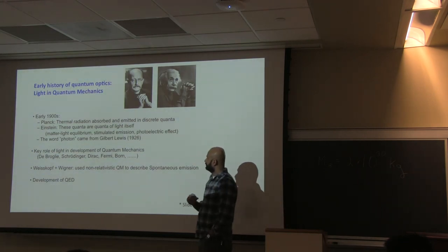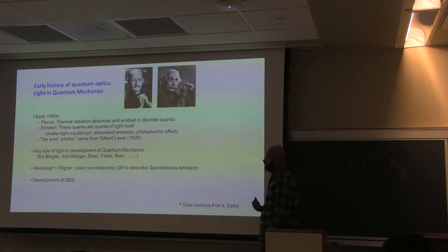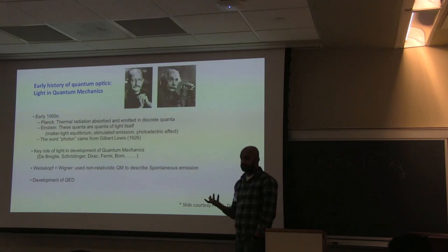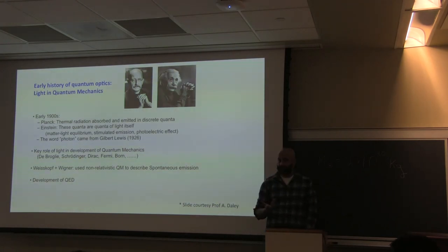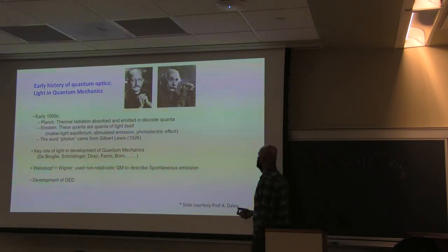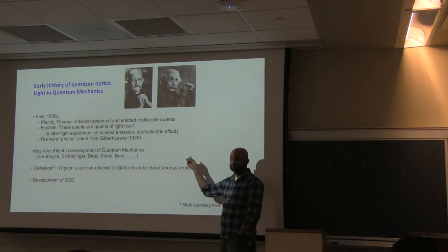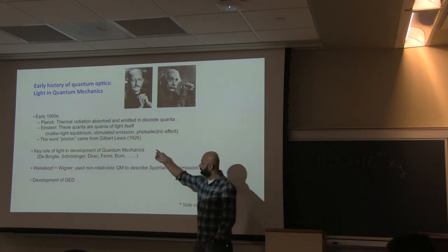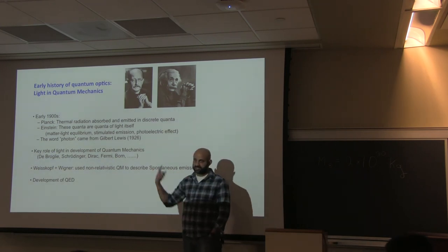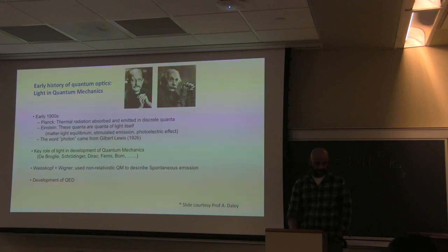From that insight — that the electromagnetic field or light itself comes in packets and it's not just the interaction with atoms that is quantized — Einstein derived very important phenomena, such as the equilibrium between matter and light, stimulated emission, which gave rise to things like lasers, and of course the photoelectric effect. The word photon itself did not arise until about 1926 when it was coined by Gilbert Lewis.